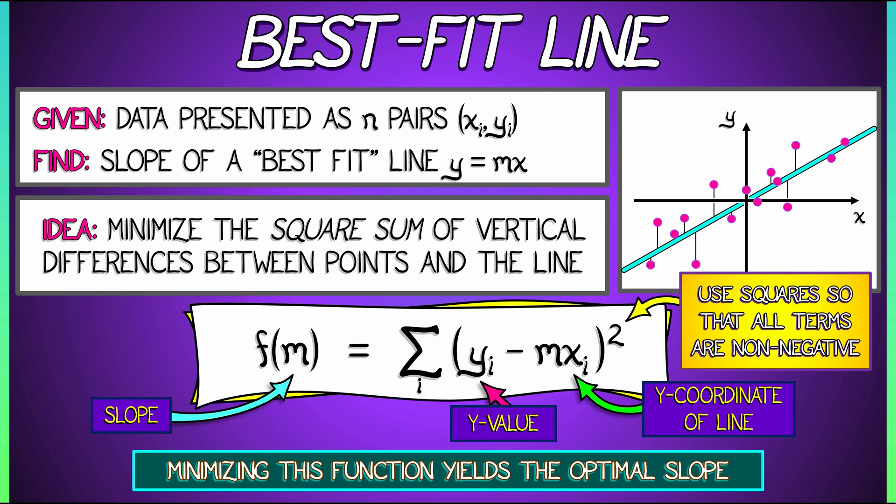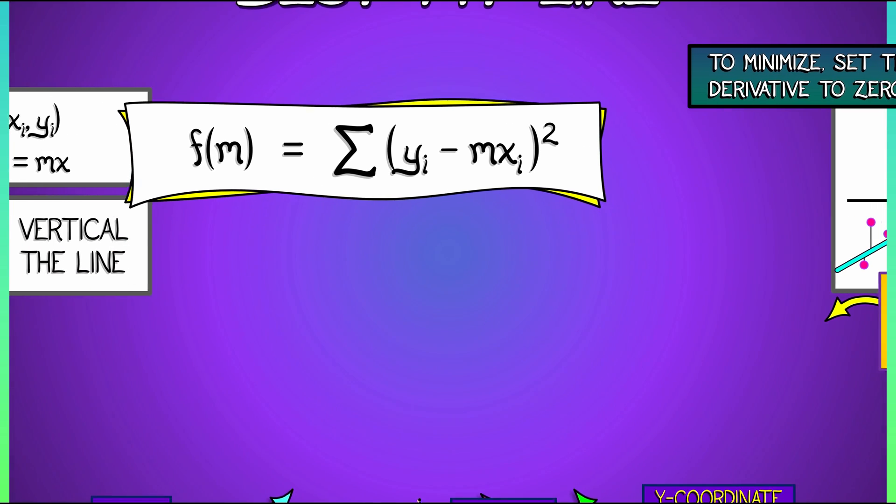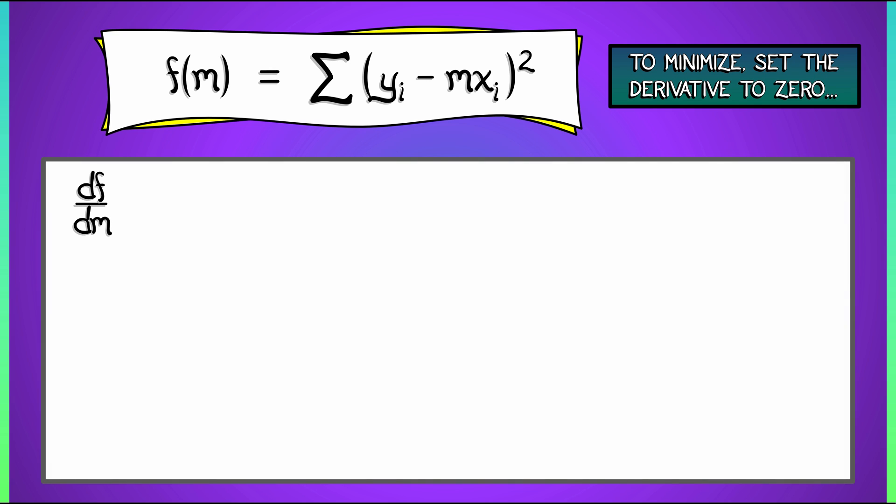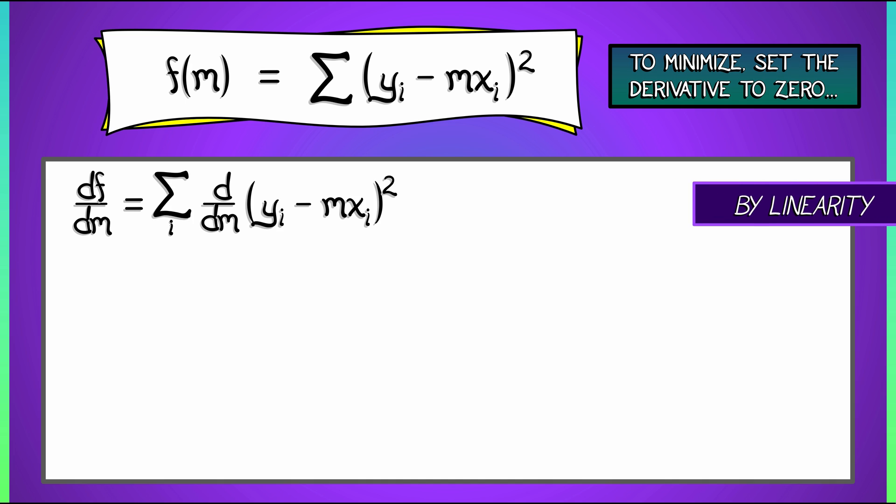So then, how do we proceed? We proceed by computing the derivative and setting it equal to zero. But what are we differentiating with respect to? Ah, this is a function of m. So we need to compute df/dm. By linearity, we can move that differentiation operator under the summation sign, and we get the sum over i of the derivative with respect to m of quantity yi minus mxi squared.